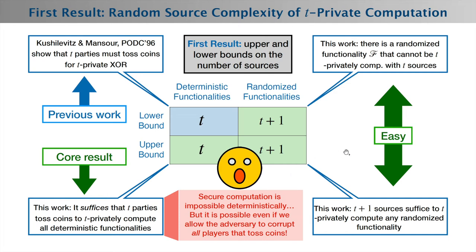This is quite surprising because it means that even though secure computation is impossible deterministically, it becomes possible to securely compute all deterministic functionalities even when the adversary could potentially corrupt all parties that can toss random coins. In particular, the adversary could see all coins ever tossed in the protocol.